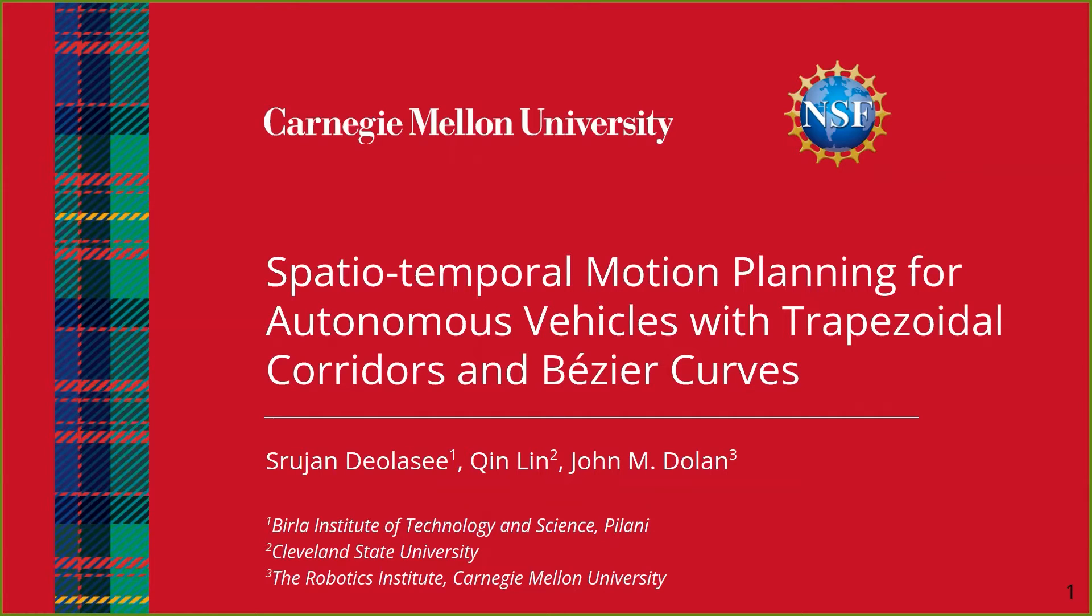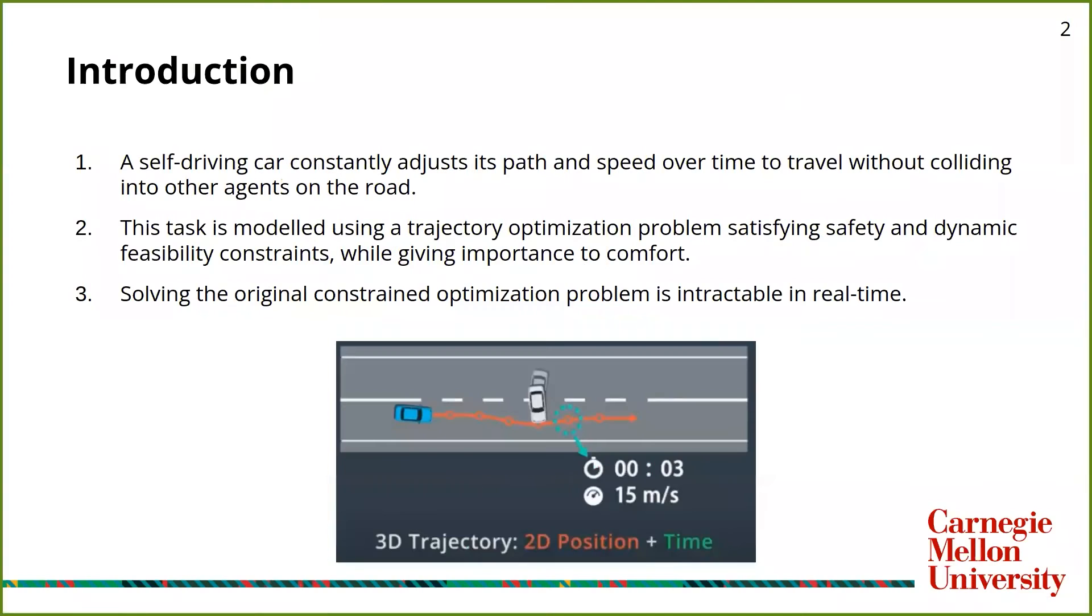The title of my project is Spatio-Temporal Motion Planning for Autonomous Vehicles with Trapezoidal Corridors and Bezier Curves. A self-driving car constantly needs to adjust its path and speed over time to travel without colliding with other objects on the road. It also needs to maintain optimal comfort levels for the passenger sitting inside. This task can be modeled as a trajectory optimization problem where we can enforce the needed safety and dynamic feasibility constraints.